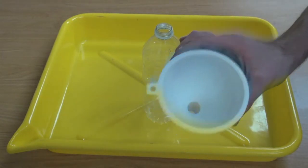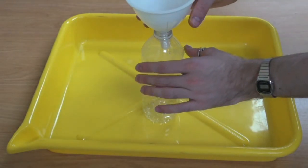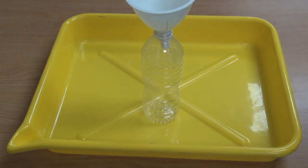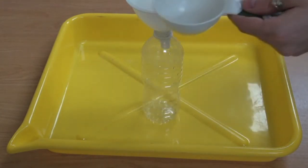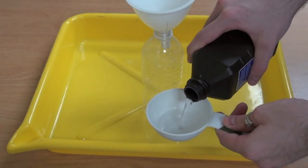Now we're going to take our funnel, place it into the lip of the water bottle, take our half cup and pour half a cup of hydrogen peroxide.